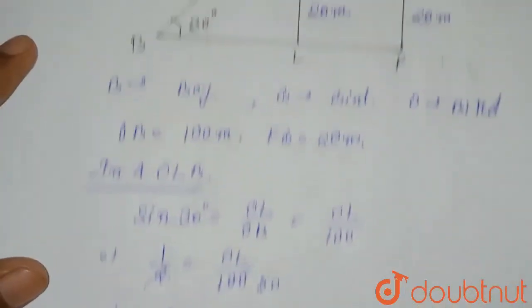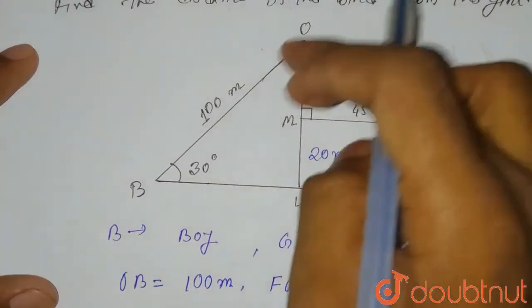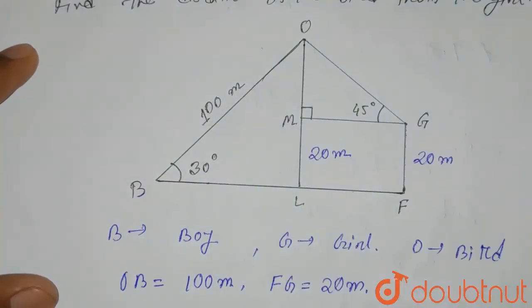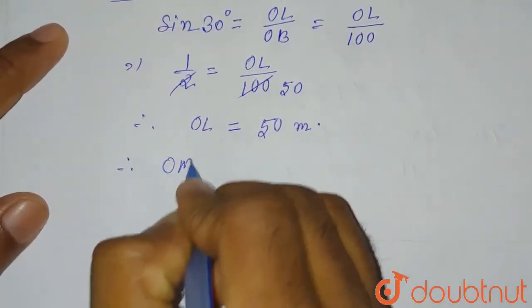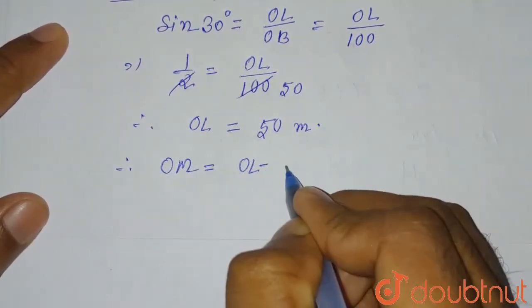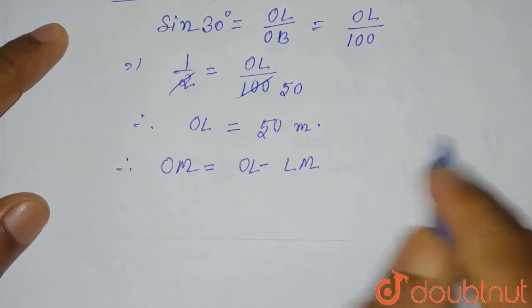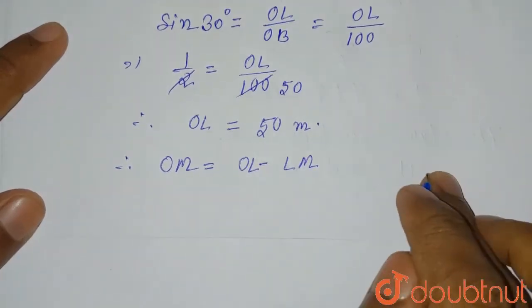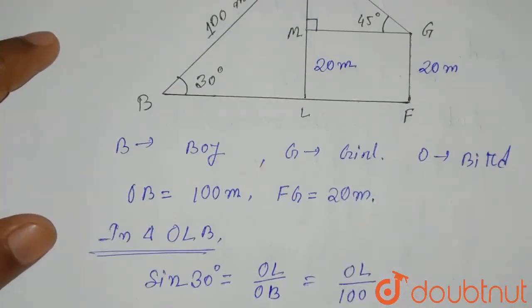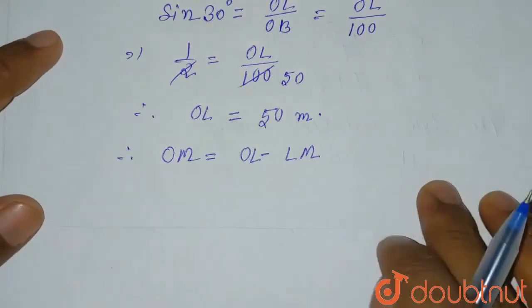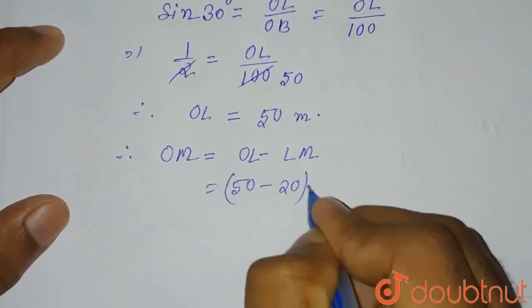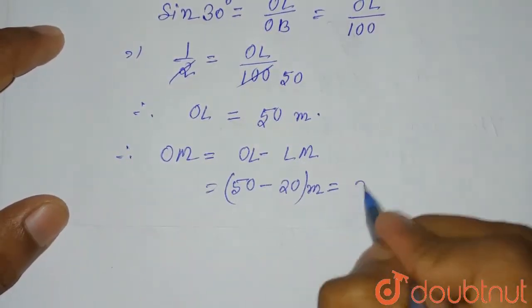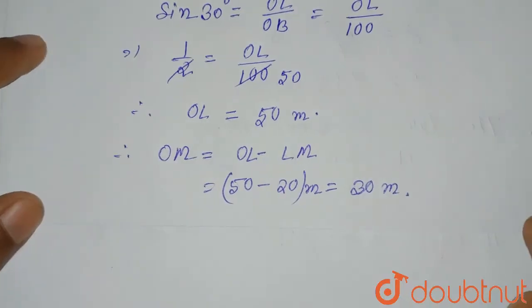We have found that the value of OL, the length of OL, is 50 meters. Now we have to find OM. Therefore, OM equals OL minus LM. We found that the value of LM is 20, so OM equals 50 minus 20 meters, which equals 30 meters.